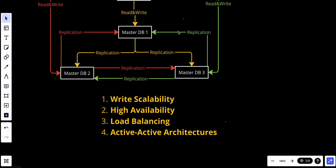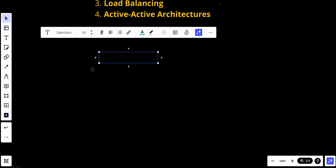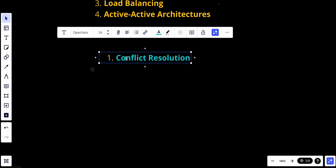Let's talk about some considerations. The first is conflict resolution — conflict resolution mechanisms are essential to ensure data consistency when multiple nodes accept concurrent write operations. Implementing effective conflict resolution can be quite complex, and we will dedicate videos to how conflict resolution works and how we solve the consistency problem. Regarding data consistency, achieving data consistency in a multi-master setup can be challenging, especially in scenarios with frequent conflicts. Careful design and planning are required.